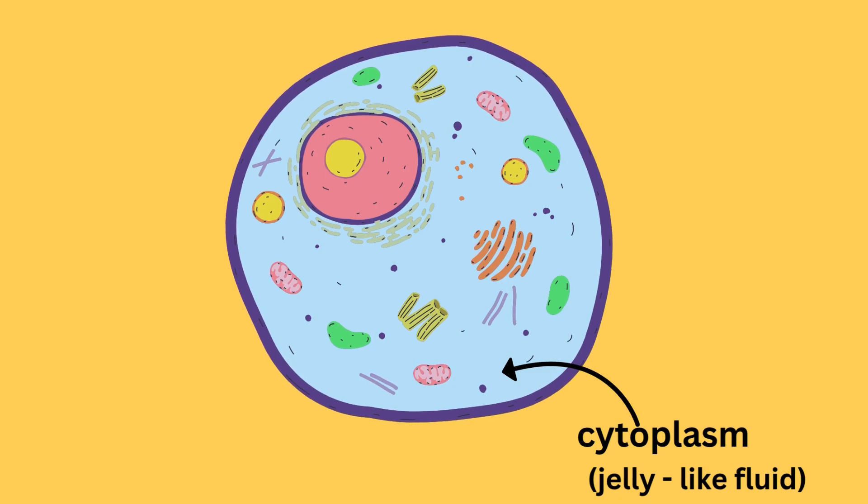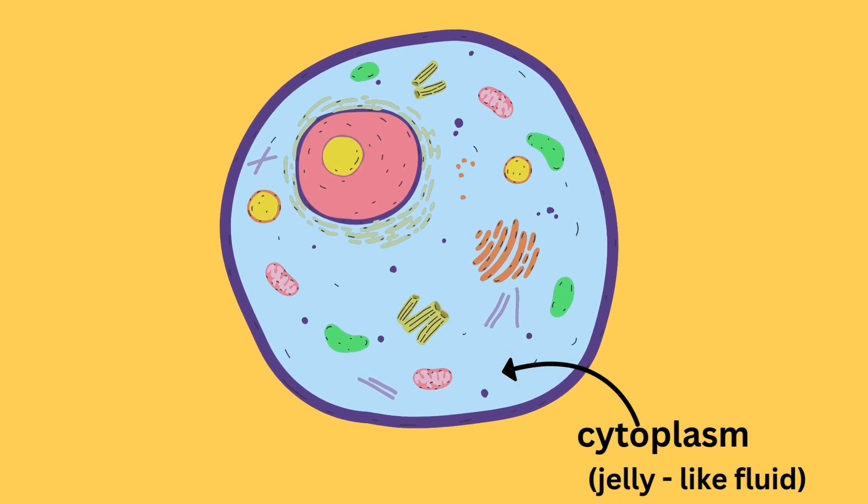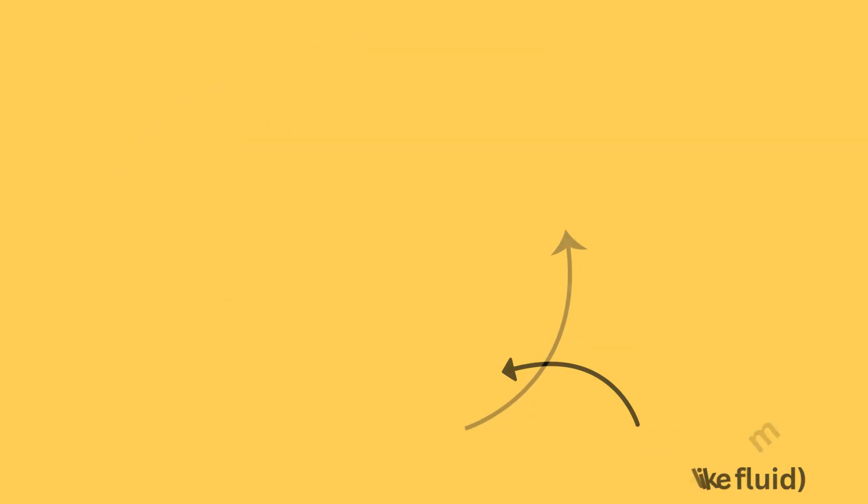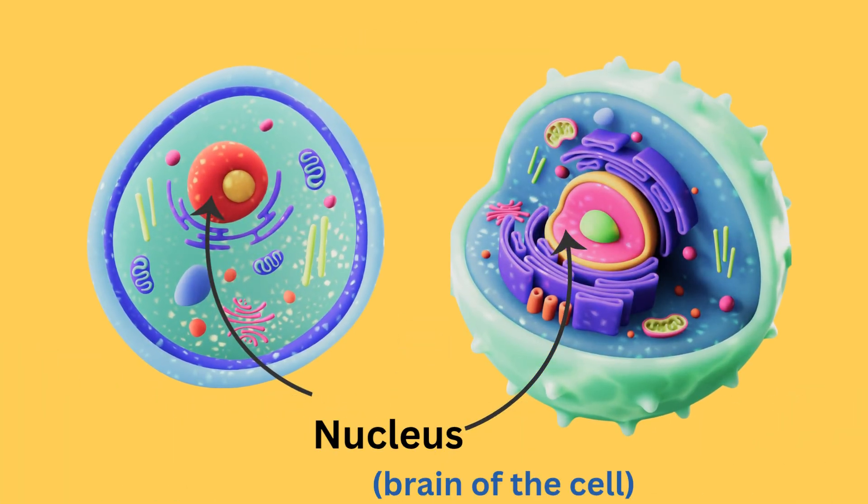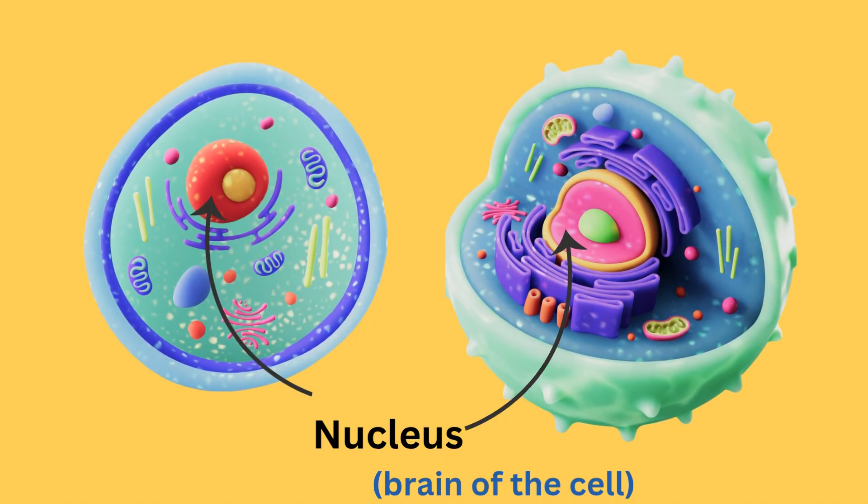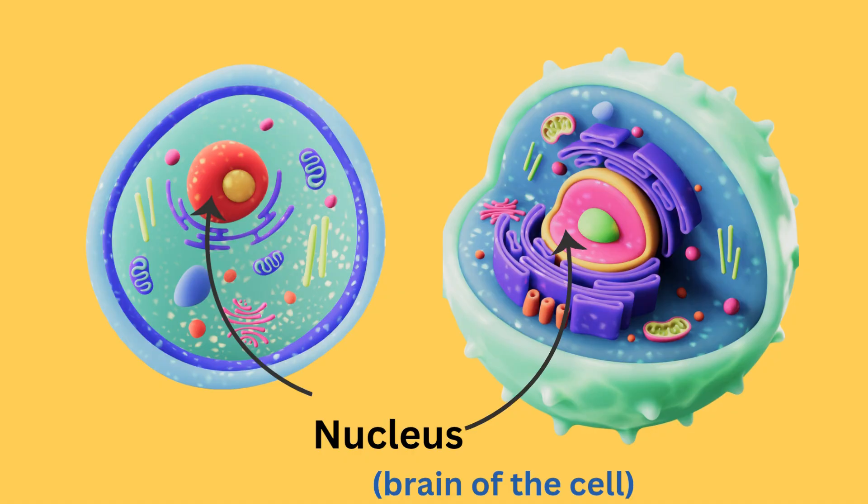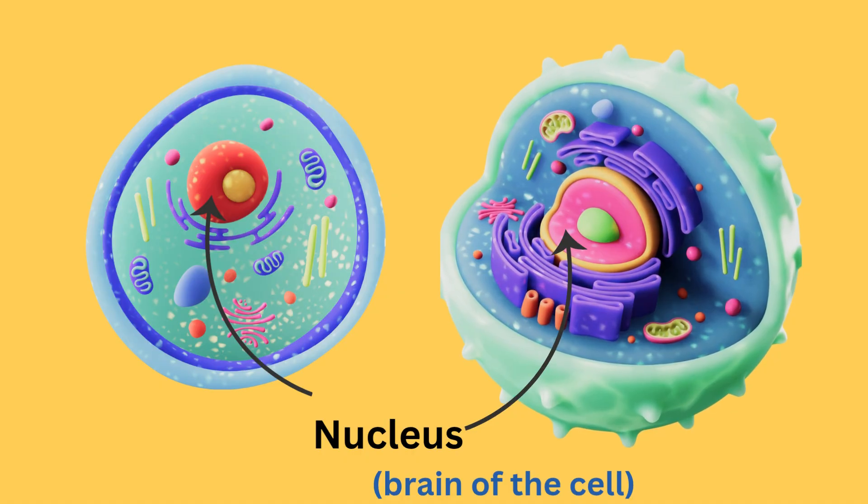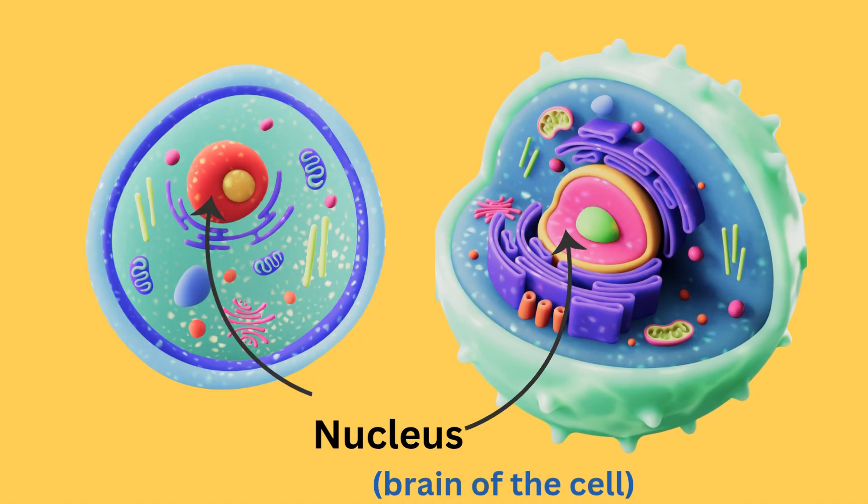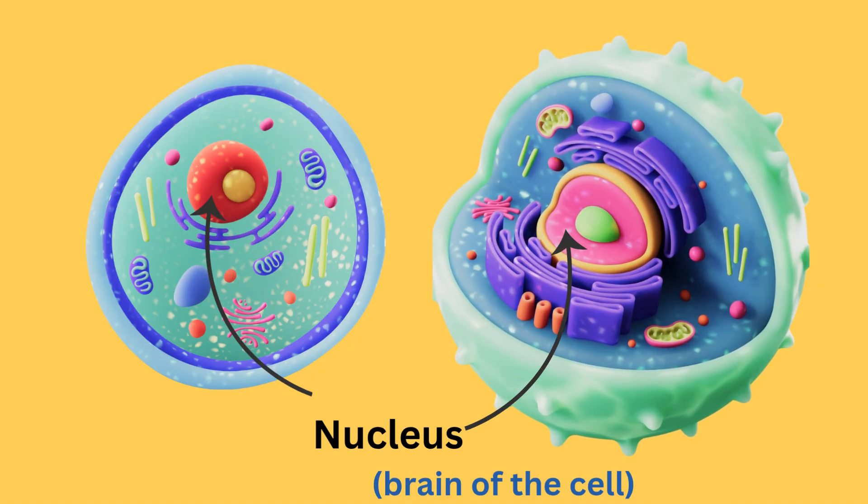Now, here is cytoplasm. It is jelly-like fluid inside the cell. Now, this is the nucleus. It is the control center of the cell. It contains DNA, the genetic material, which gives the instructions for all cell activities. It's like the brain of the cell.